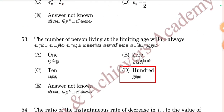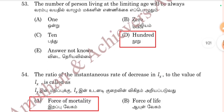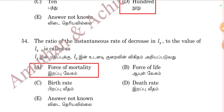The number of persons living at the limiting age will always be 100. The ratio of the instantaneous rate of increase in LX to the value of LX is called Force of Mortality. Options include force of life, birth rate, and death rate. Therefore, force of mortality is correct — Option E, question 54.